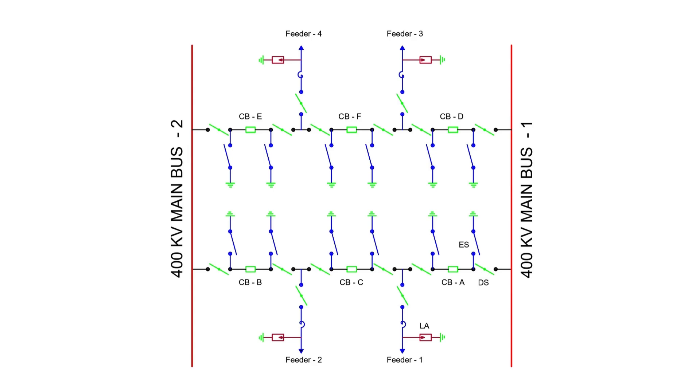Let's focus on the one and half breaker scheme. Take a look at the figure on your screen. In this figure, CB stands for circuit breaker, LA stands for lightning arrestor, ES for earth switch and DS for disconnect switch, which is also known as an isolator.